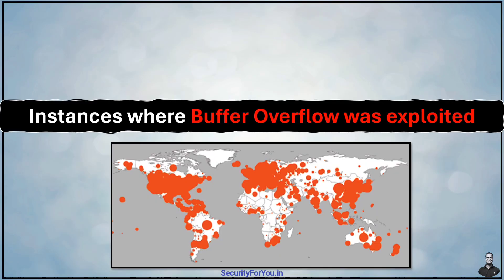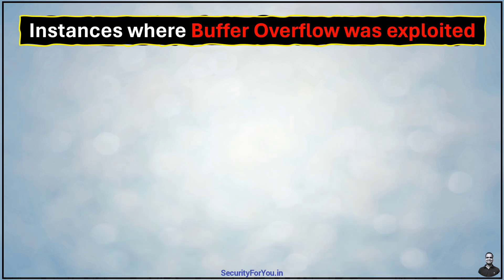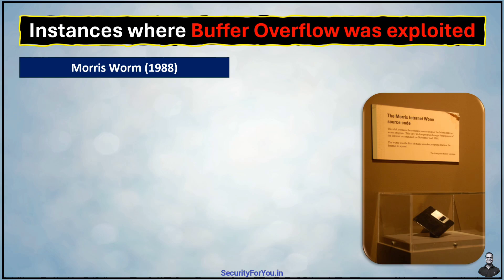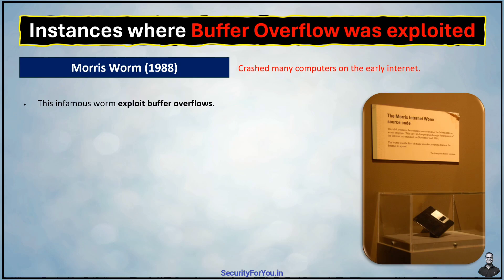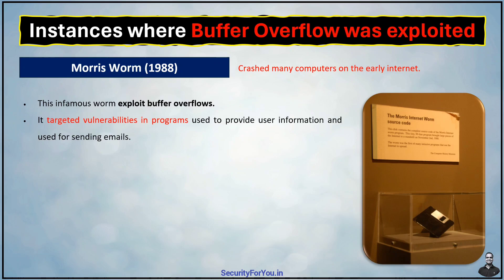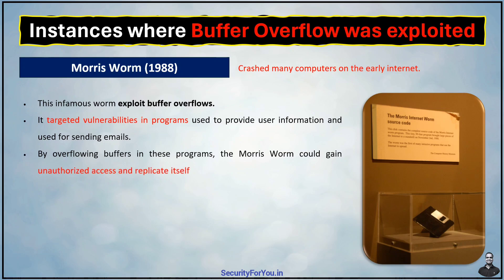Let's look at some famous examples where buffer overflows were used by hackers to cause major problems. In 1988, the Morris worm crashed many computers on the early internet. This infamous worm exploited buffer overflows, targeting vulnerabilities in programs used to provide user information and send emails. By overflowing buffers in these programs, the Morris worm could gain unauthorized access and replicate itself across the early internet.